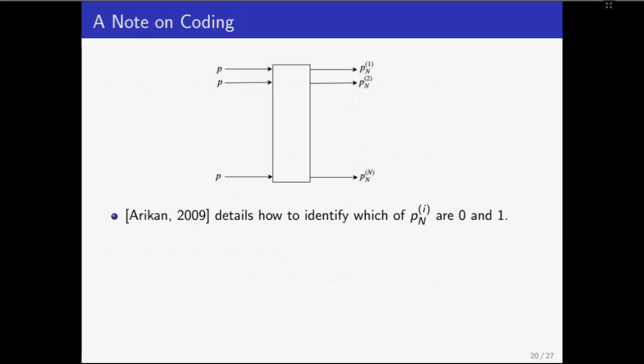So in conclusion, from n binary erasure channels all with erasure probability P, we have constructed n new channels in which P fraction of them are completely noisy and 1 minus P fraction of them are completely noiseless. Observe that we haven't talked about how to identify which channels are noisy and which are noiseless. Rest assured that Arikan in his paper prescribes an algorithm to find this but that is not a focus of this talk.